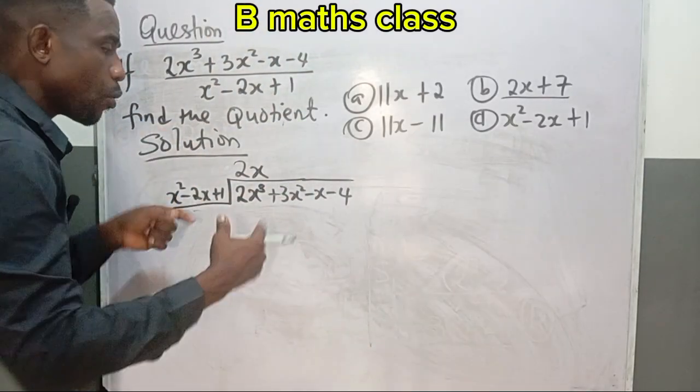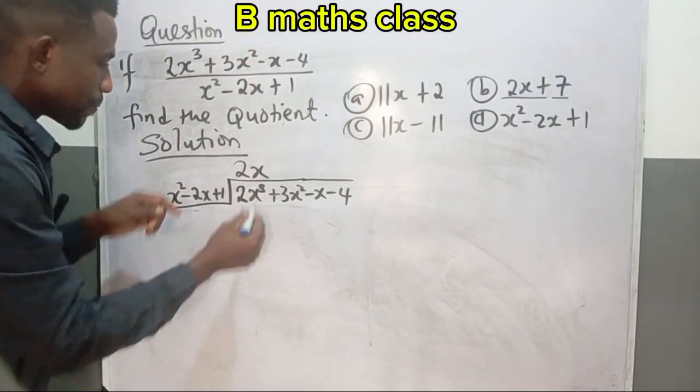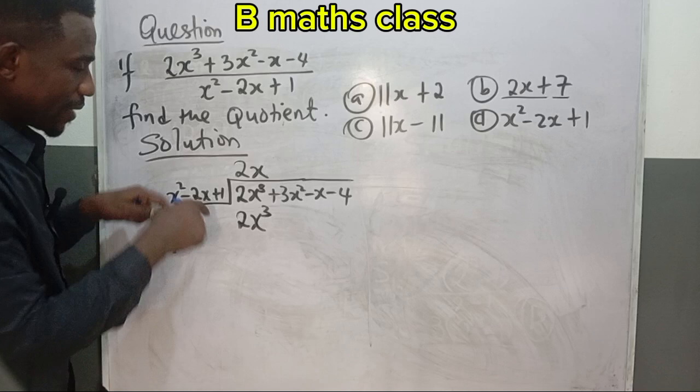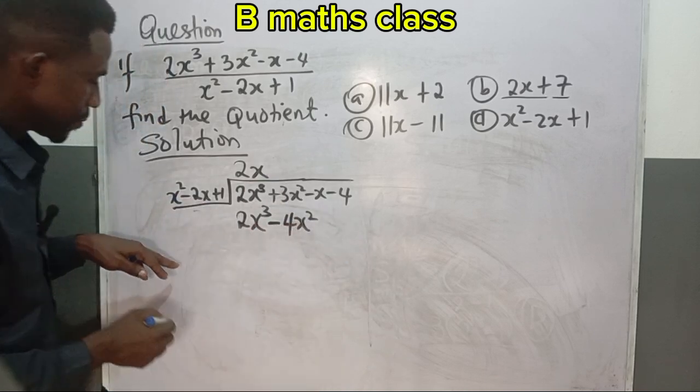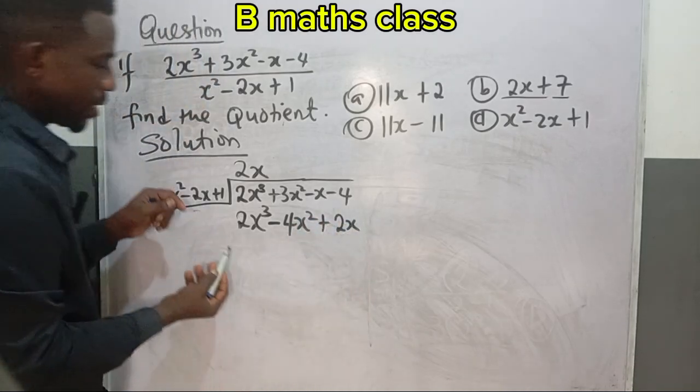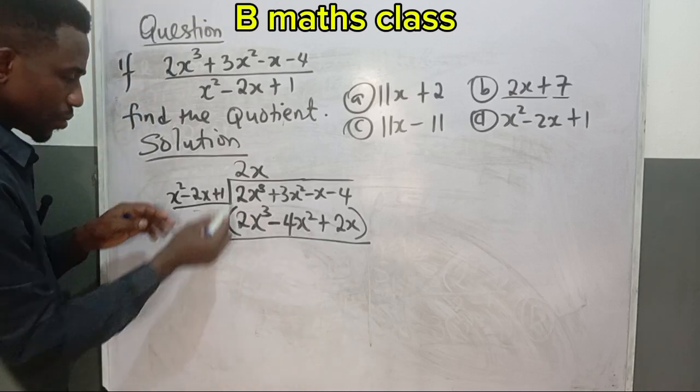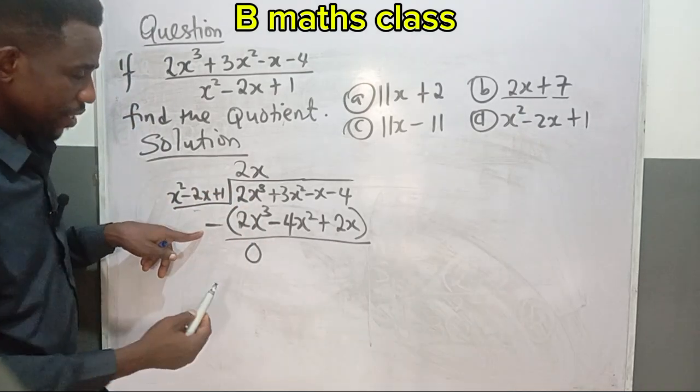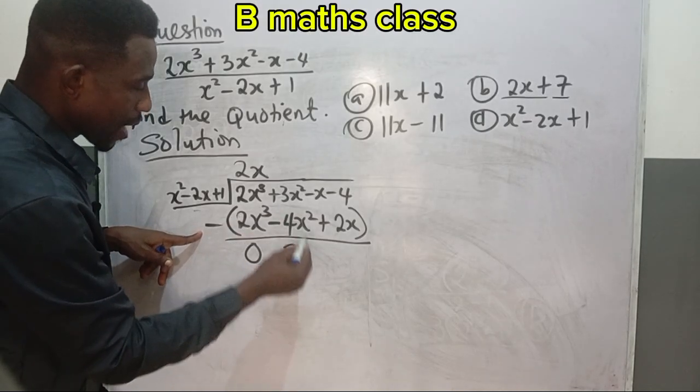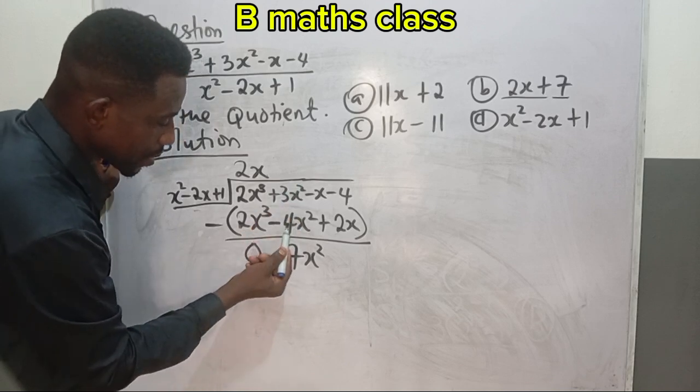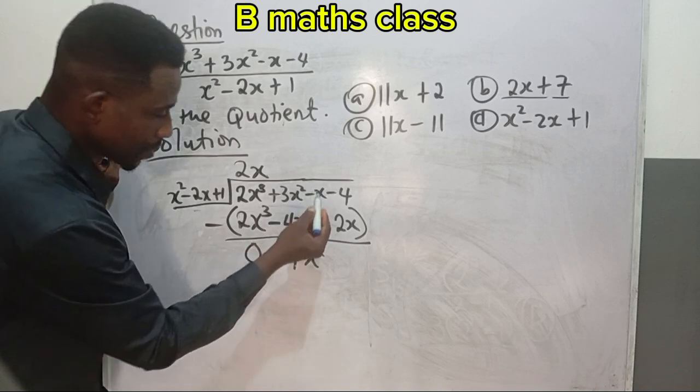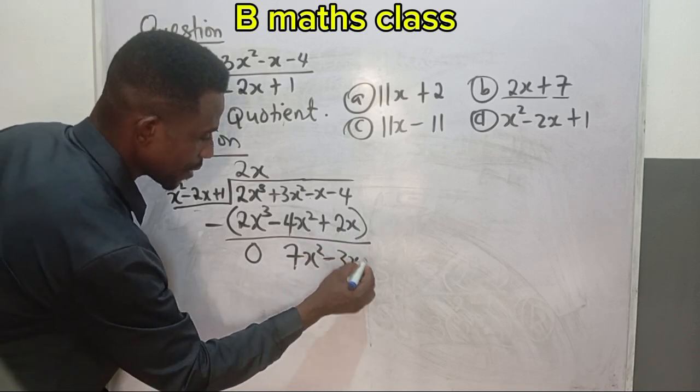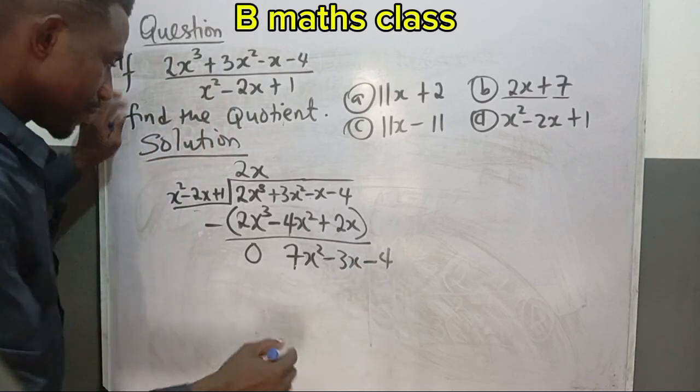Then for those writing WAEC, let's see how we can divide this down so that you'll be able to understand how this solution was obtained. Now 2x, you multiply it by everything here. 2x times x² becomes 2x³, 2x times -2x will be -4x², 2x times 1 we have +2x. So that we add minus to this. Minus 2x³, 2x³ minus 2x³ will give us 0. Minus times minus is plus, so 3 + 4 will give us 7x². Minus times plus is minus, minus x minus 2x will give us -3x, then this is -4.